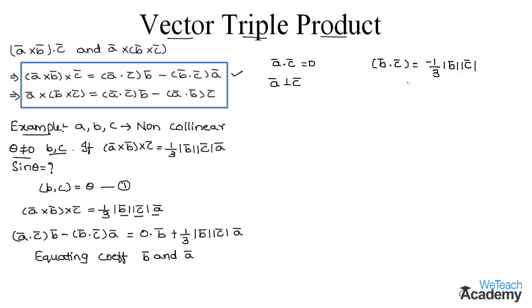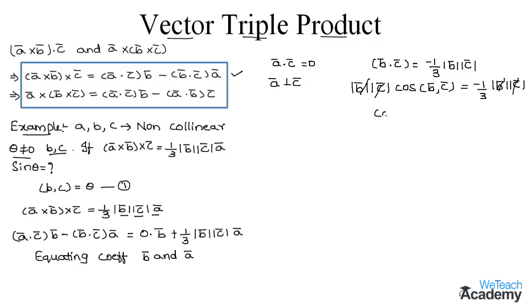Using the definition of the dot product, b̅ · c̅ = |b̅||c̅|cos θ. Substituting into our condition: |b̅||c̅|cos θ = −(1/3)|b̅||c̅|. Cancelling |b̅| and |c̅| from both sides, we get cos θ = −1/3.